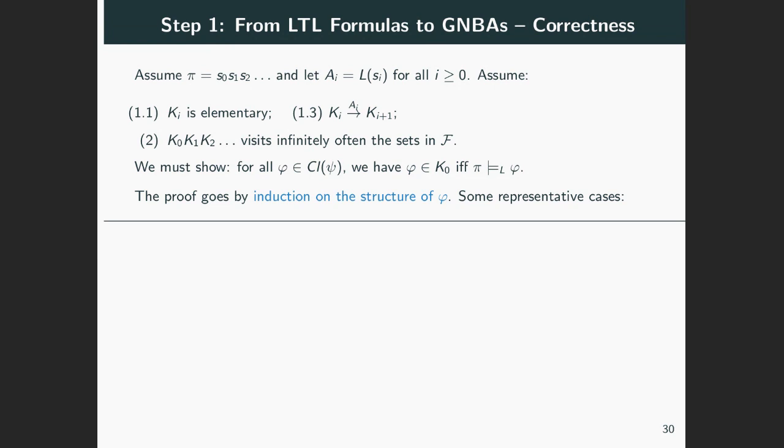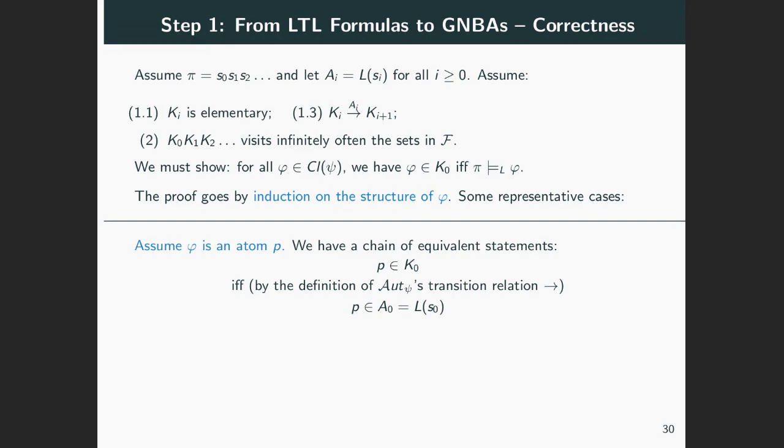We prove this by induction on the structure of φ. Here are some representative cases. If φ is an atom P, we have the following chain of equivalences. Belonging to K₀ means belonging to A₀ for P, by the way the transition relation is defined. Remember that some Kᵢ transit somewhere through some Aᵢ just in case Aᵢ consists of all atoms in Kᵢ. This is by definition of the transition relation. And this gives us what we want by the definition of the satisfaction relation. So we started with membership of P to K₀ and showed that this is equivalent to satisfaction by π. And our proof of this case is done.